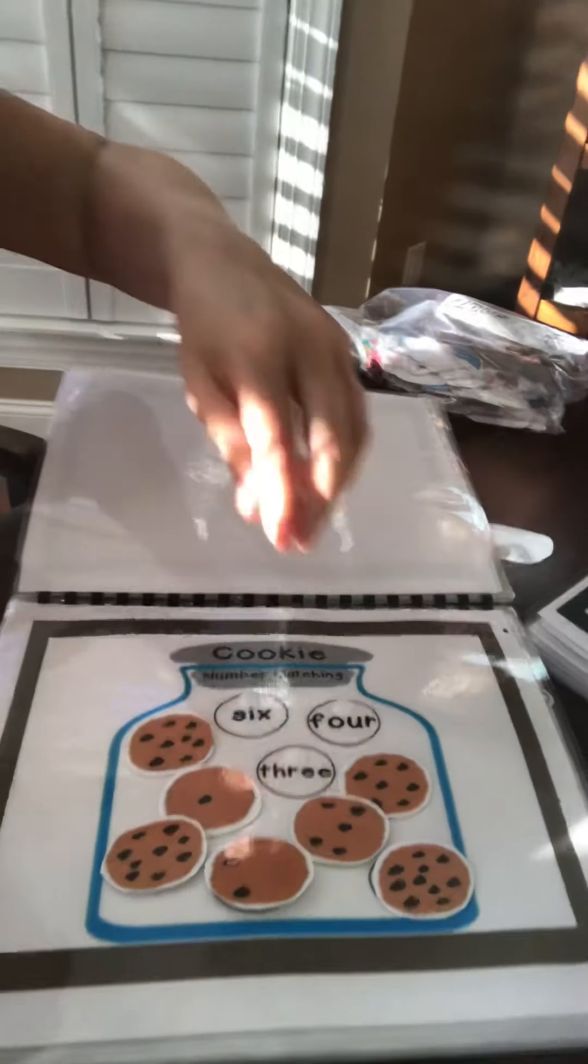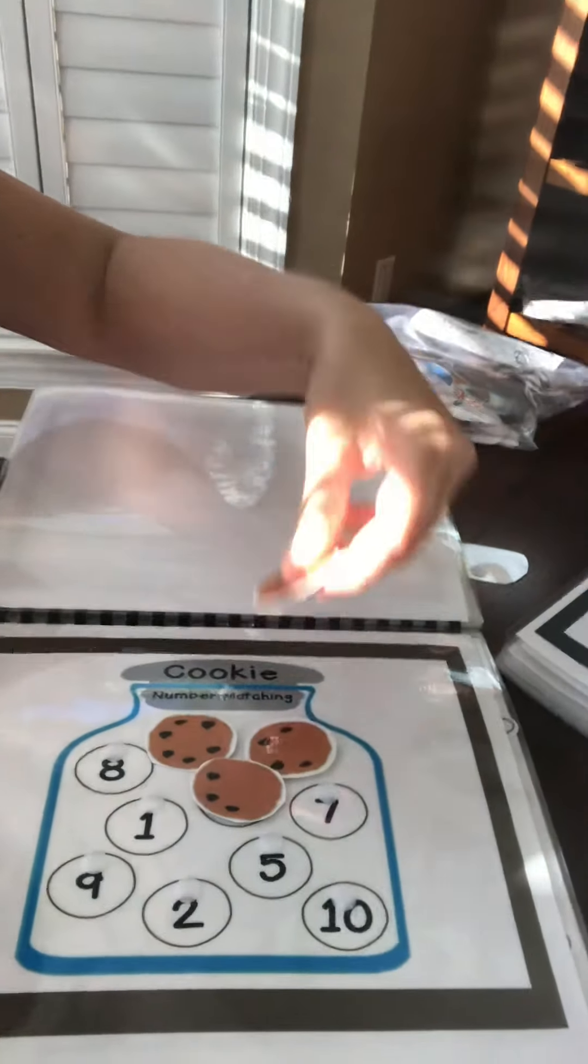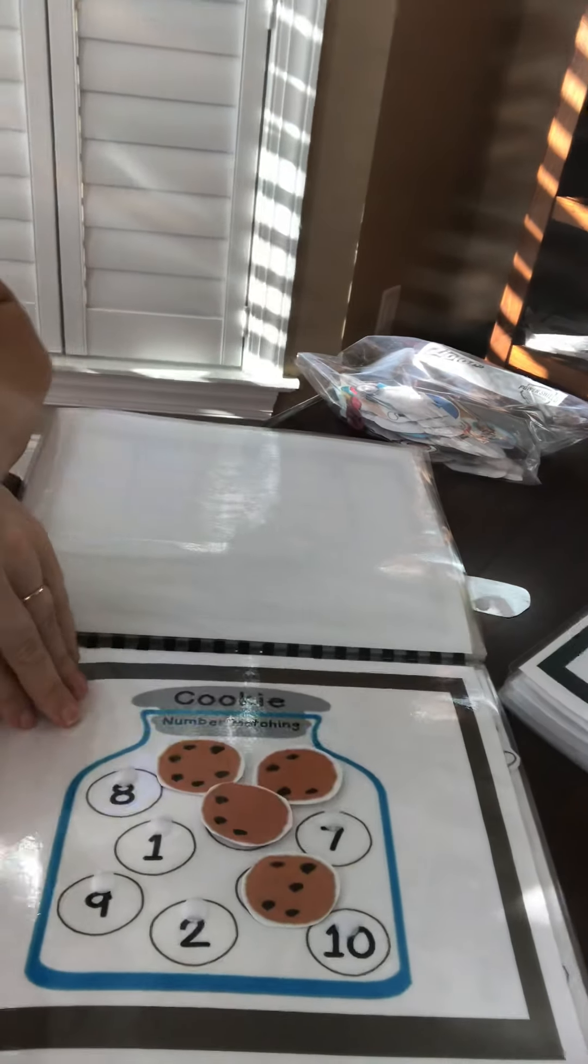But anyway, so the cookies, which one is five or the other way around, show me five. Sometimes numbers are easier, which one has five chocolates in the cookie jar.